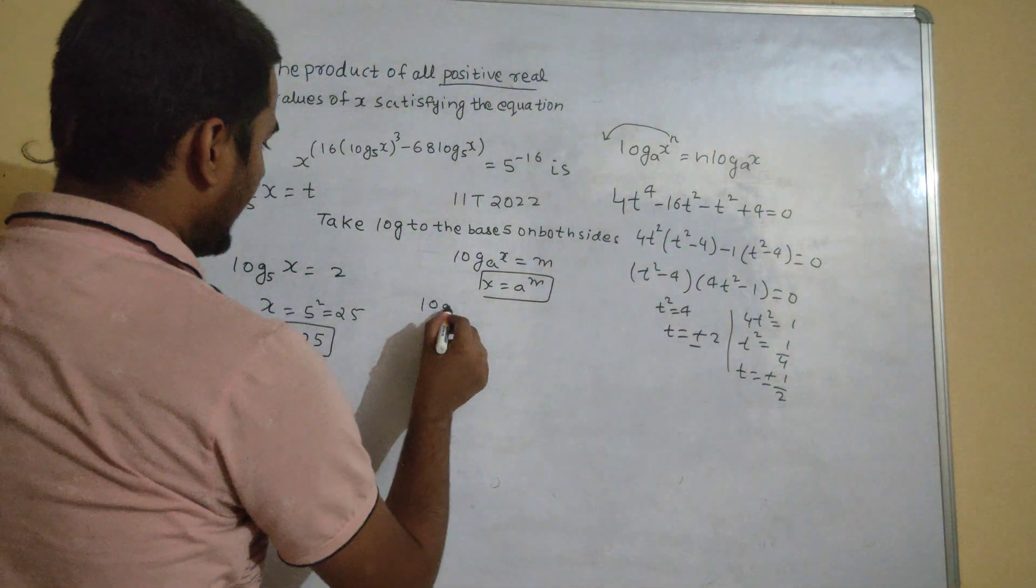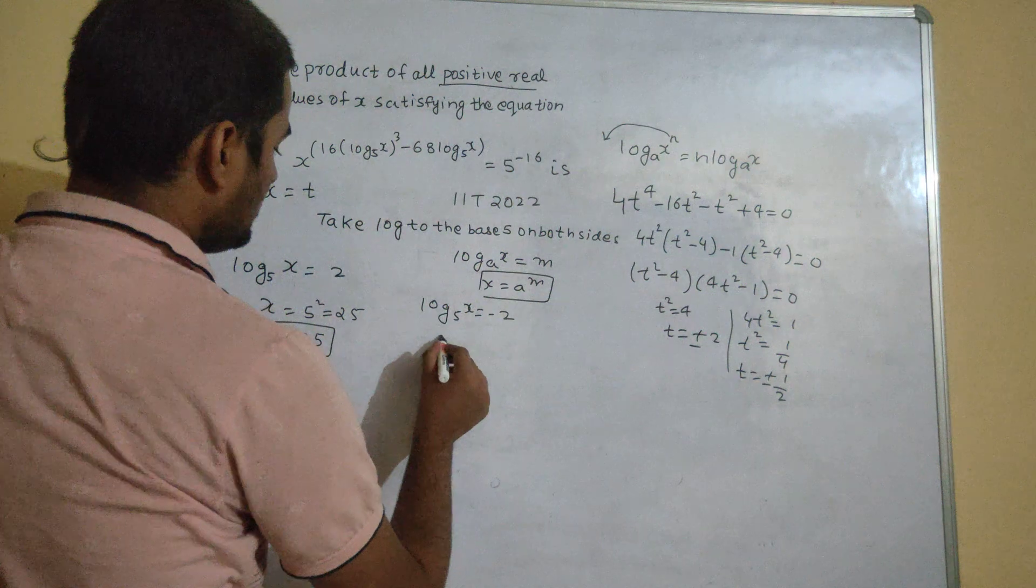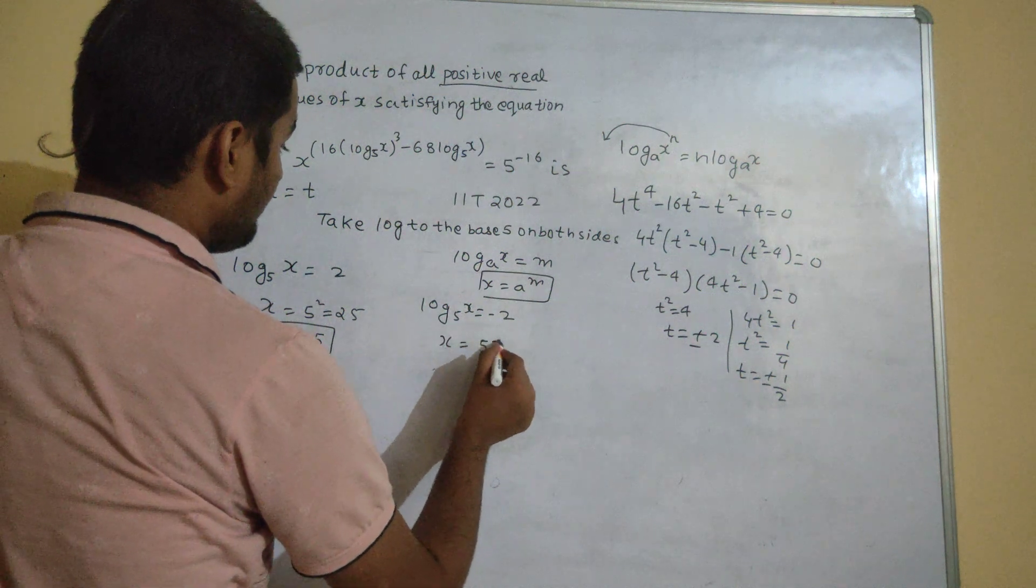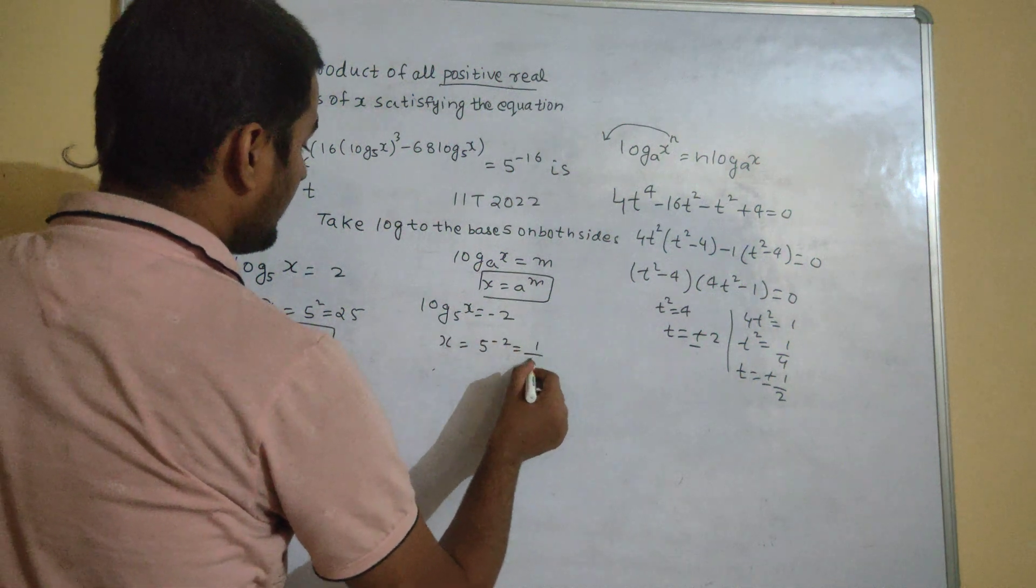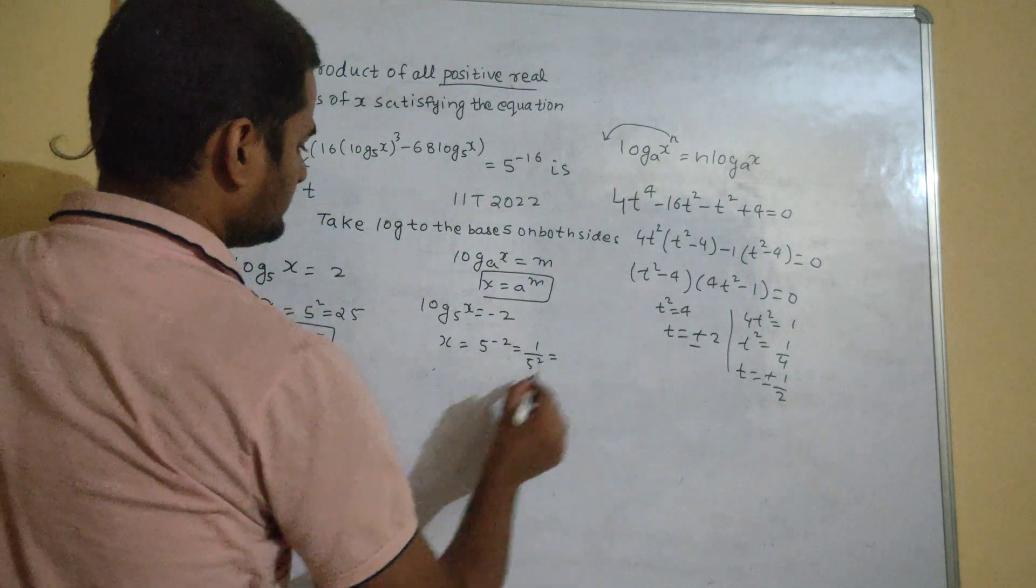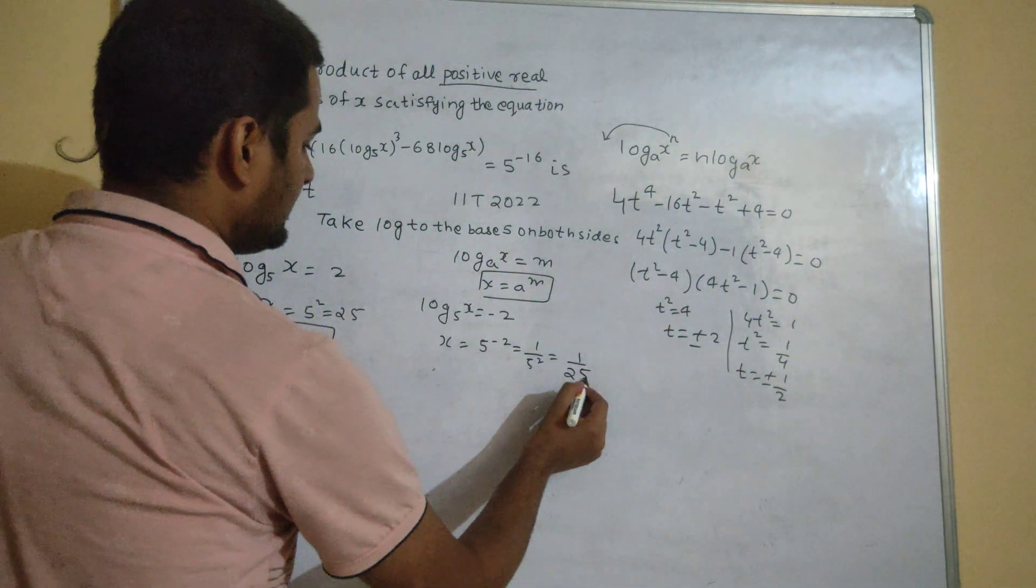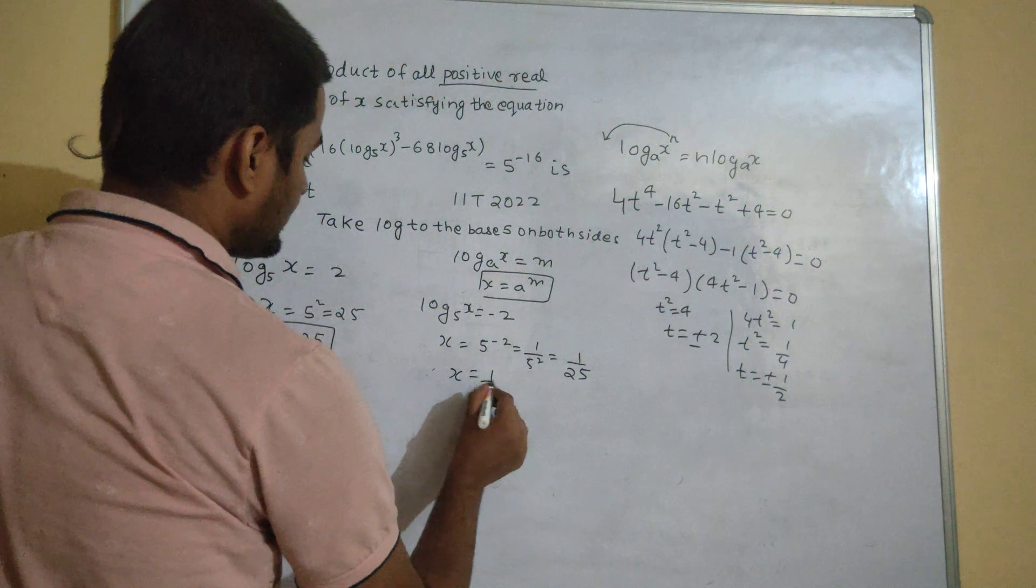Again, log x to the base 5 is minus 2 also, so x is 5 power minus 2, which is 1 upon 5 square, which is 1 upon 25, another value of x is 1 by 25.